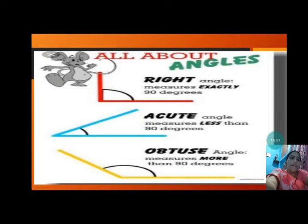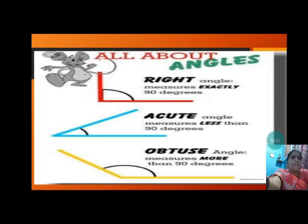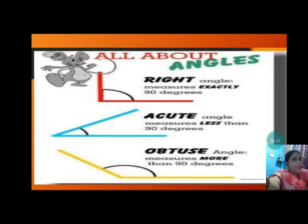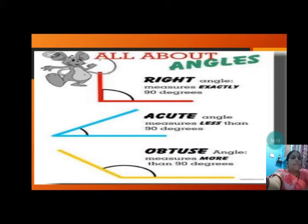So now let us recall what we have read: Right angle measures exactly 90 degrees. Acute angle measures less than 90 degrees. Obtuse angle measures more than 90 degrees.